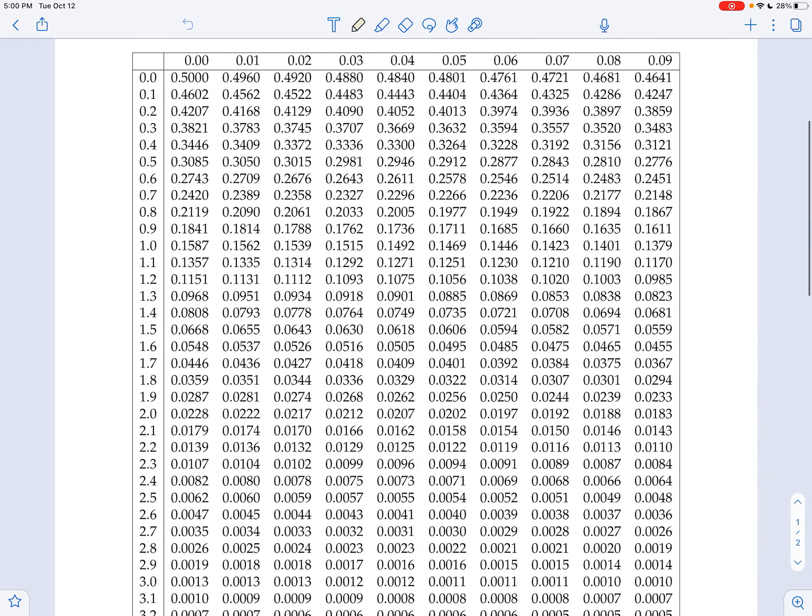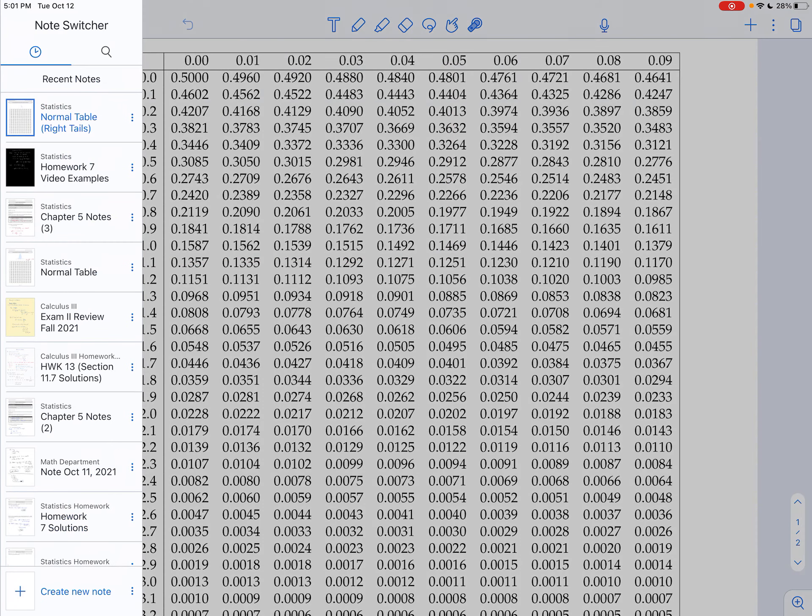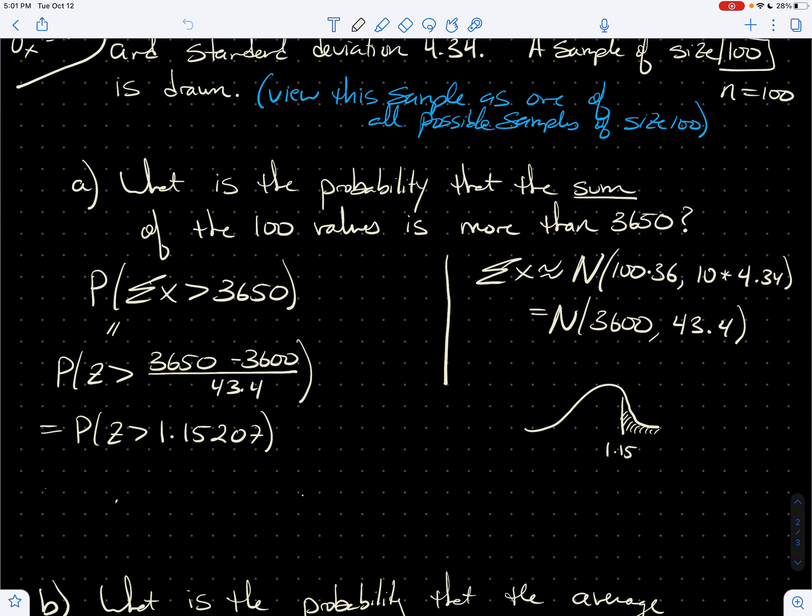We can go to our right tail table. 1.15 is right there. So the value that we want is 0.1251. So this is just 0.1251. That's the probability that the sum of these 100 values is more than 3650.